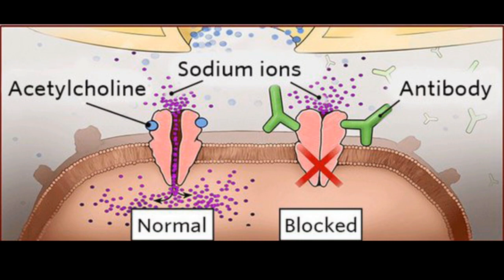But what happens in a patient suffering from Myasthenia Gravis? IgG autoantibodies develop against the acetylcholine receptors, as you can see here. These autoantibodies basically prevent the binding of acetylcholine with the cholinergic receptors, or they destroy the receptors. So either these autoantibodies will prevent the binding or destroy the receptors entirely.